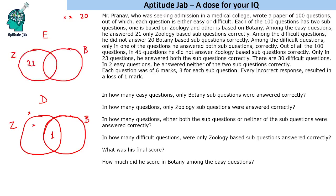Out of all 100 questions, in 45 questions he did not answer zoology-based questions correctly. Only in 23 questions did he answer both sub-questions correctly — since one is in difficult, that gives 22 in easy. There are 30 difficult questions, which means there are 70 easy questions.